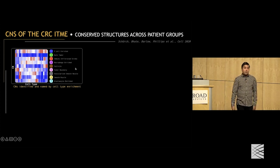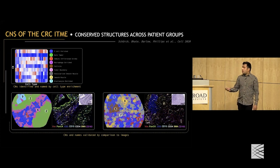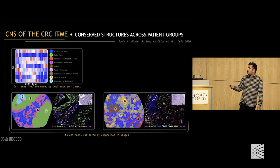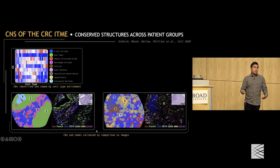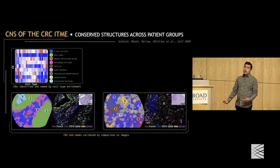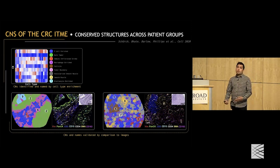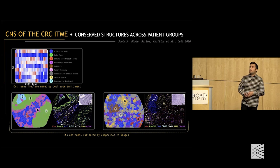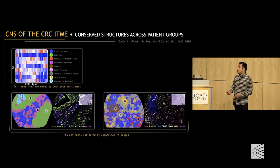Once we interpreted what the CNs are, we looked at both H&E and multiplex imaging data and validated that these regions not only exist but correspond to what we're naming them to be. More sophisticated algorithms, such as neural networks or a weakly supervised approach, wouldn't have enabled us to actually name what those regions were.